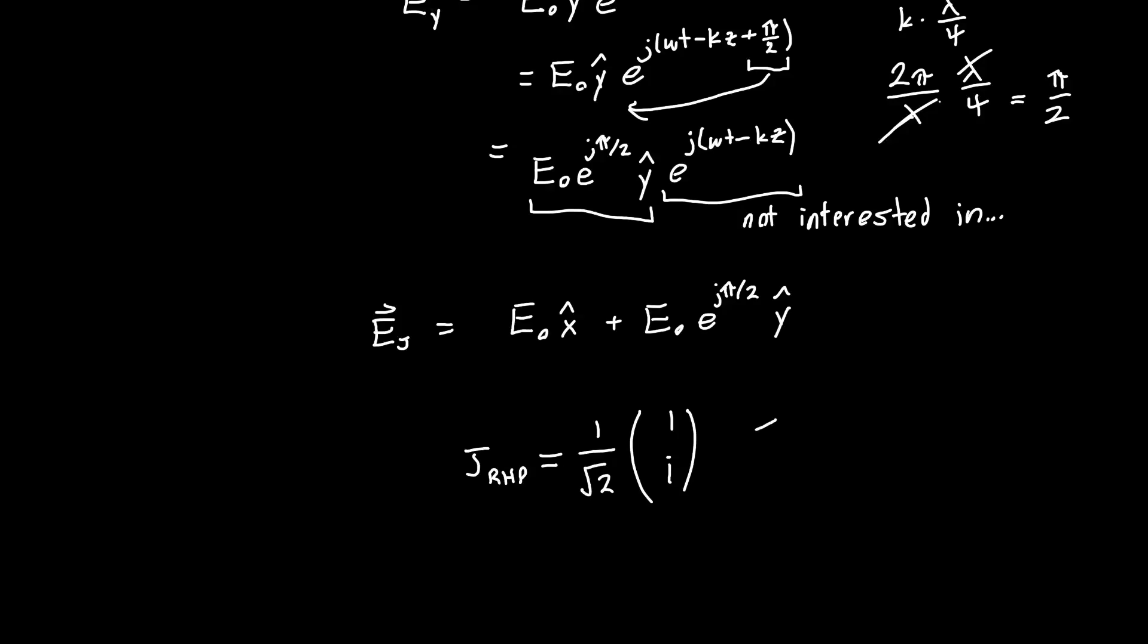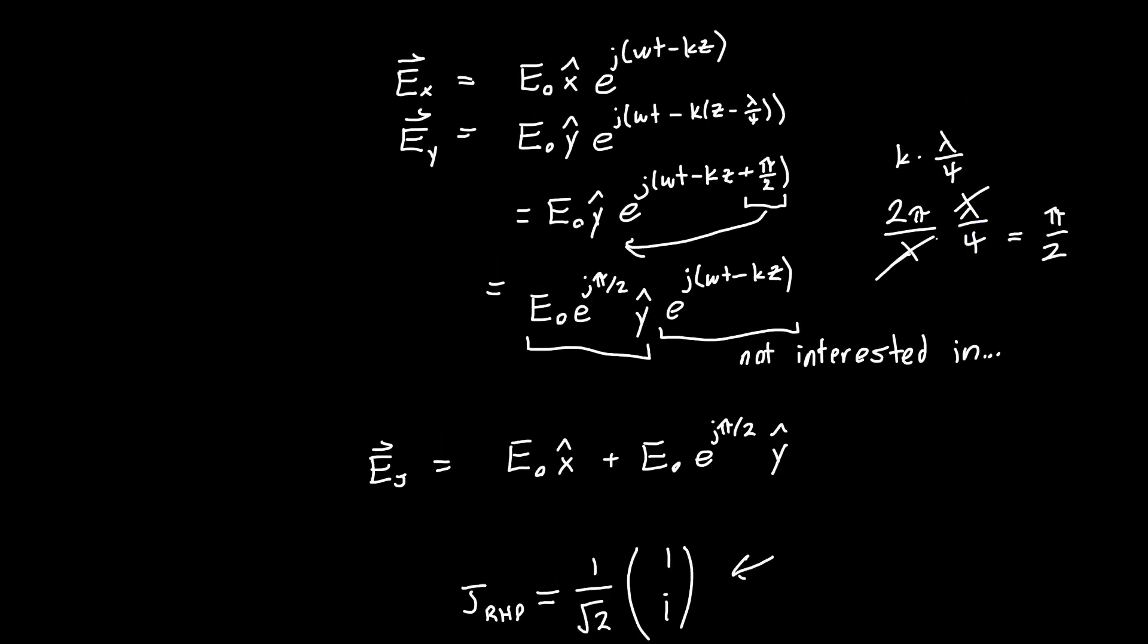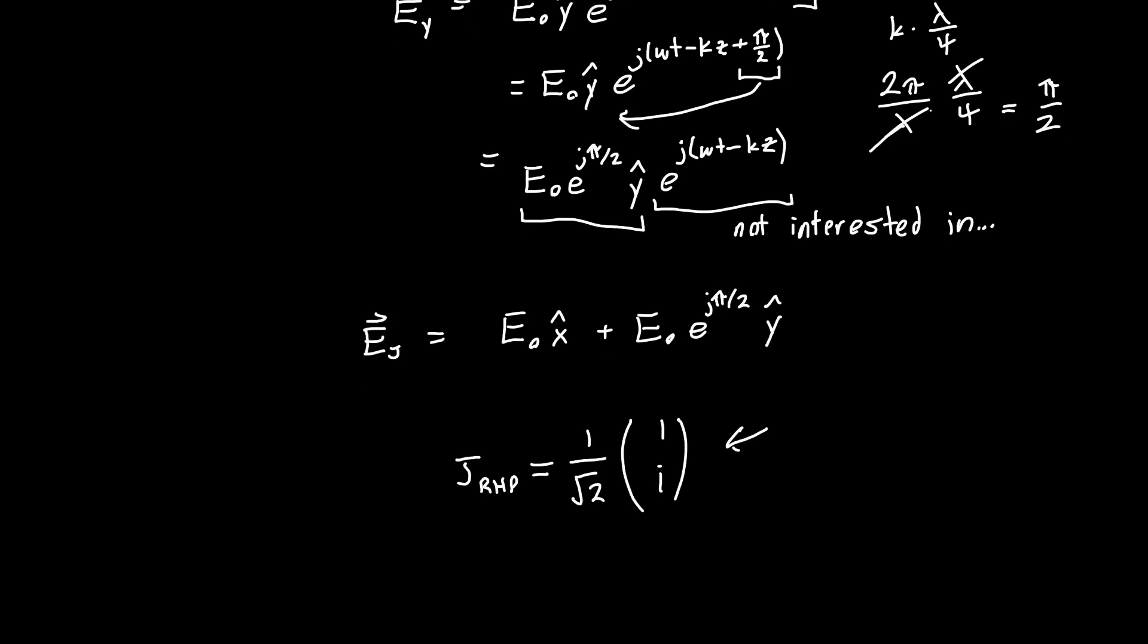And this contains all the information that we had before, but it's super, super simple. So rather than writing down this plus this, we just write down this super simple column vector. And this will actually allow us to do some really cool things.